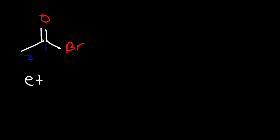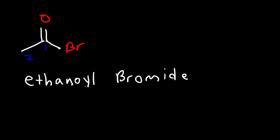In this video we're going to focus on naming acid halides. This is an acid bromide, and because we have a total of two carbons associated with ethane, this is going to be called ethanoyl bromide. Since we have a bromine atom attached to it, the common name for this particular acid halide is acetyl bromide. Go ahead and try this one.